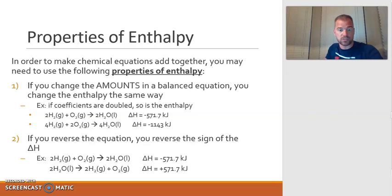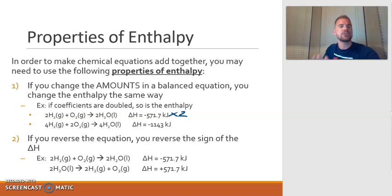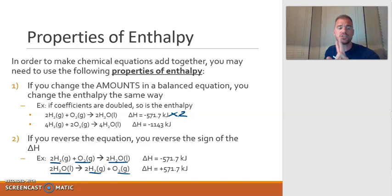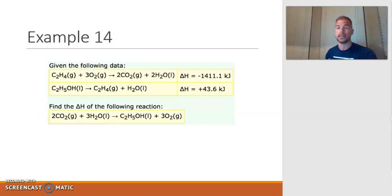If I doubled all the coefficients to 4, 2, 4, since I doubled the equation, I multiply the enthalpy by two as well. And it's not always double — you can triple, quadruple, or cut in half. You can do anything you need to in order to make the equation work how you need it. The second property of enthalpy is reversing the reaction. If you reverse the reaction, you reverse the sign of the enthalpy. So if hydrogen and oxygen reacting to create water has a delta H of -571.7 kJ, and you flip the reaction so products become reactants and reactants become products, then you just change the sign to +571.7 kJ. These two properties of enthalpy are going to help us finagle equations so they add together to be what we want.